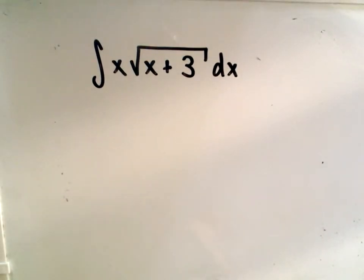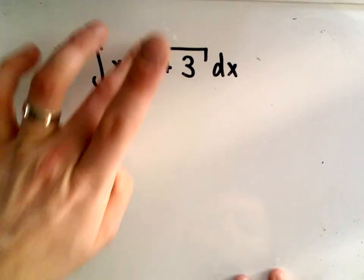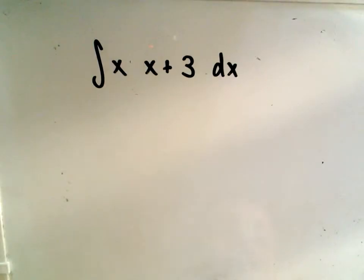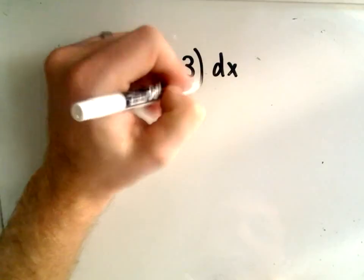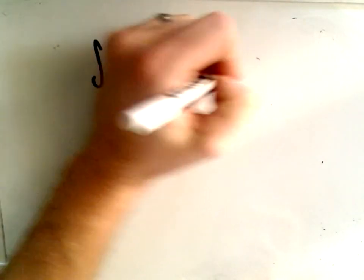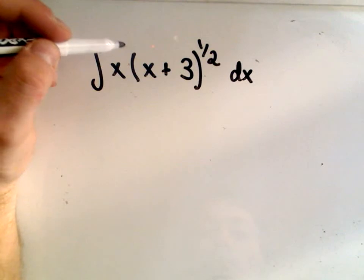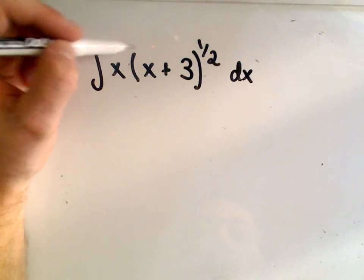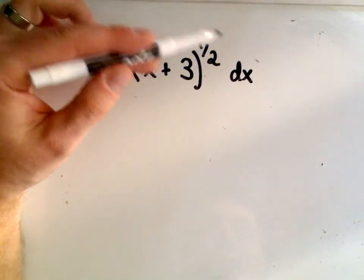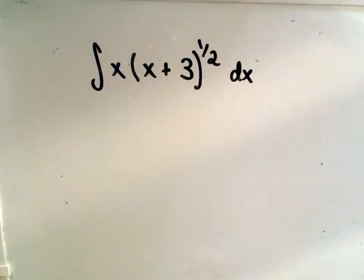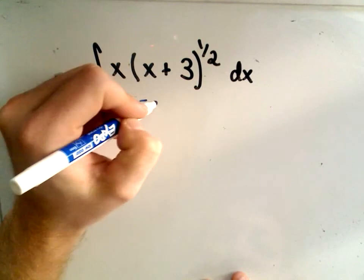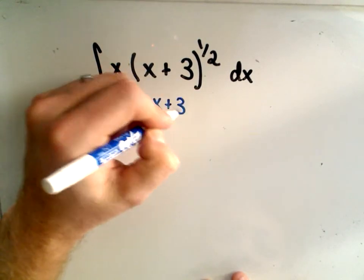27, they want us to integrate x times the square root of x plus 3. The first thing I would do, the same thing as if I'm taking derivatives or anti-derivatives, I like to rewrite things with exponents instead of radical notation. So the first thing I think is, is there any algebra we can do? But we can't multiply things out because of this one-half power.